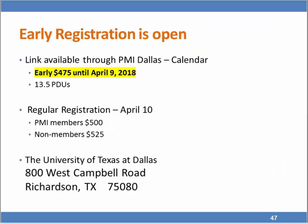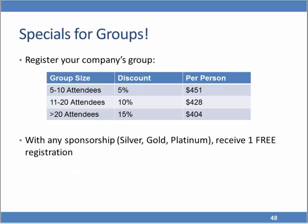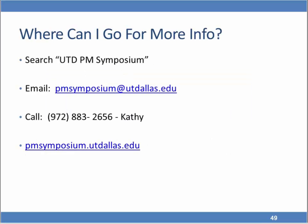Early registration is open right now — $475, available until April 9th, and you get 13.5 PDUs. Regular registration starts April 10th at $500 for PMI members and $525 for non-members, all at the University of Texas at Dallas. There are special group discounts, and sponsorships are available with free registration. For more information, search UTD PM Symposium, or email pmsymposium@utdallas.edu, or call Kathy Lovelace at 972-883-2656. The website is pmsymposium.utdallas.edu.